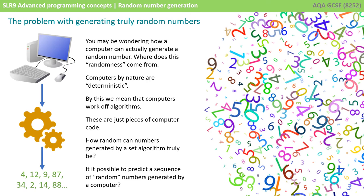So you may be wondering how a computer system is actually able to generate a random number. Where does this randomness actually come from? By their very nature, computers are what we call deterministic, and by this we mean the computer works with algorithms, and algorithms, of course, are just pieces of code.